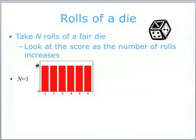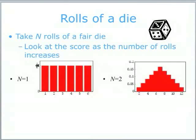Do it twice — what do we get? Well, the least score you can get is two ones, so two is the lowest score, the highest score is two sixes, and this shows the distribution of the scores in between. The most likely score is seven, because the number of combinations of getting seven is the greatest across the two throws. You'll notice that we've gone from a uniform distribution to something with a bit more structure — it's turned into a triangular shape.